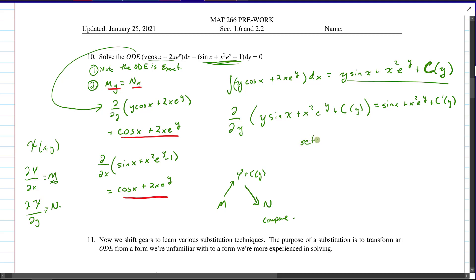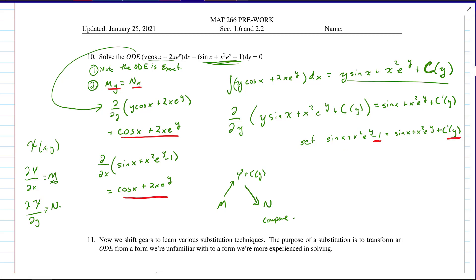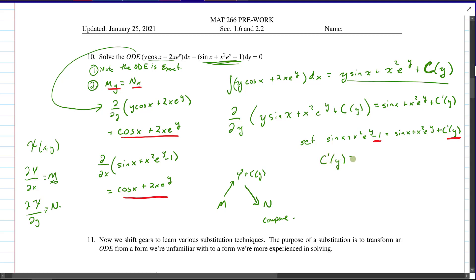If we set the n of xy equal to that expression, so we've got sine of x plus x squared e to the y minus one, that needs to equal the sine of x plus x squared e to the y plus c prime of y. That means that by position, this must be equal to this by a positioning argument that we make over and over again in this class. So we know that our c prime of y needs to be equal to negative one. Well, that enables us to solve for c of y. So integrating both sides gives us that c of y needs to be equal to negative y plus some other constant. Maybe I'll put a little c there.